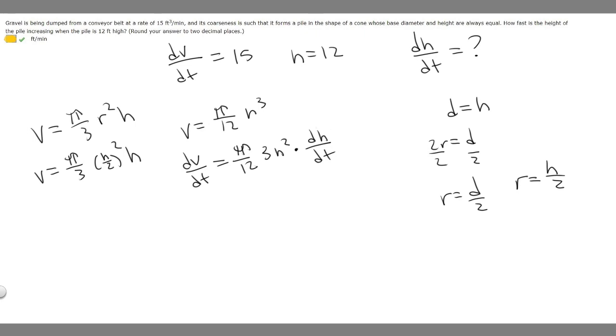Now we can plug in our numbers and solve. dV/dt, we already know, is 15. So 15 = π/12 times 3 times h². What is h? We know that the height is 12, so h is 12. So it's times 12² times dh/dt.